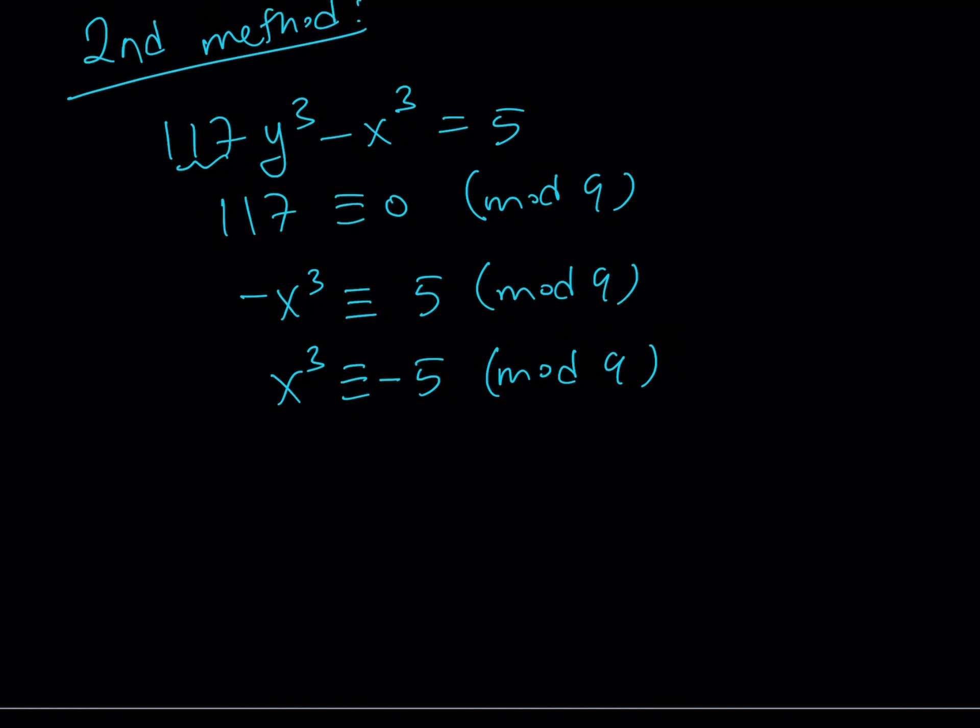x³ is congruent to negative 5. And, negative 5 basically means 4 mod 9. Because, you can just add 9. 9 means 0 in mod 9, right?